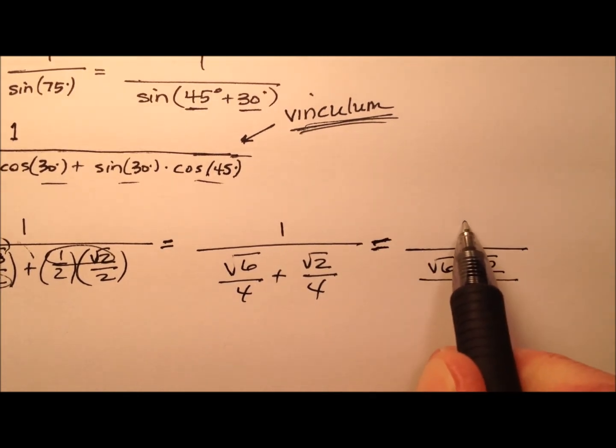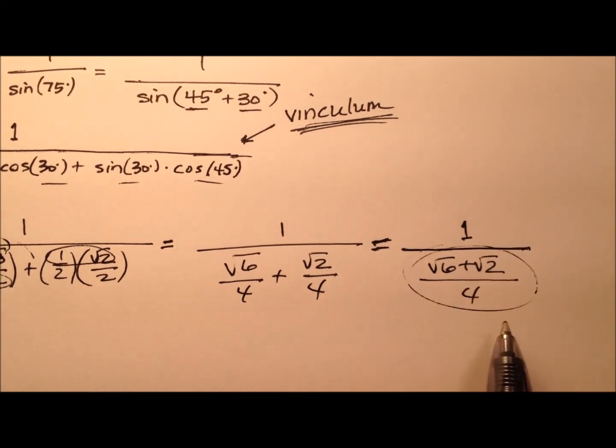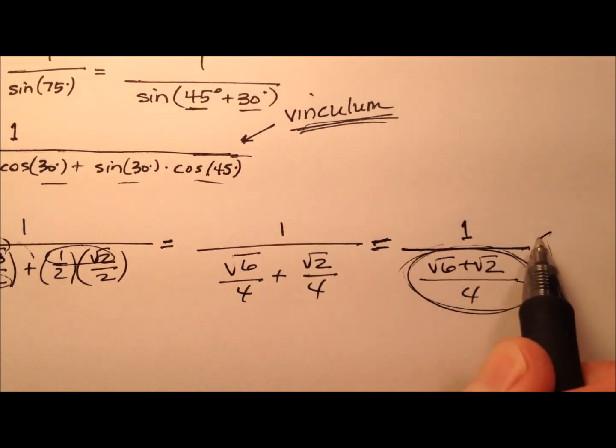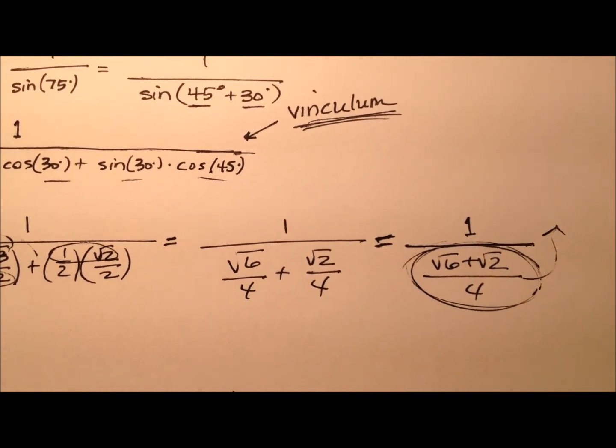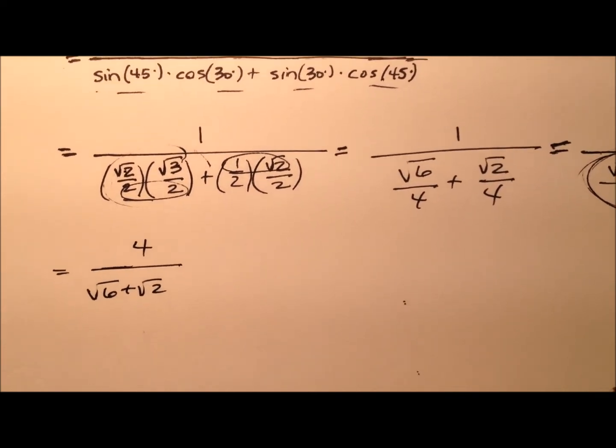When we have this 1 over business, this fraction is in the denominator, so we're really concerned with taking its reciprocal. Let's take this denominator and flip it over. It's going to turn into 4 over the square root of 6 plus the square root of 2.